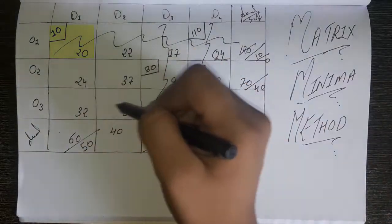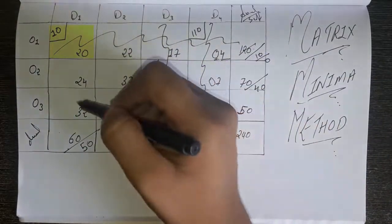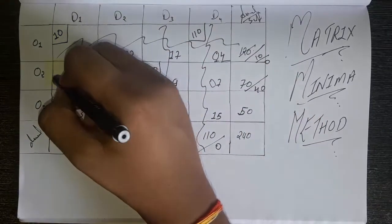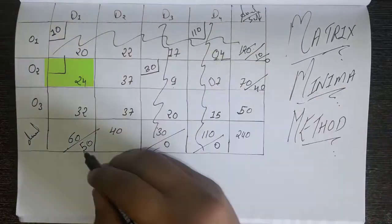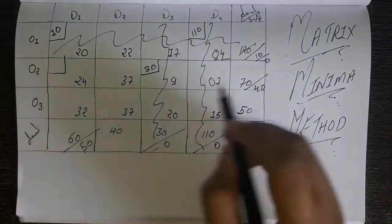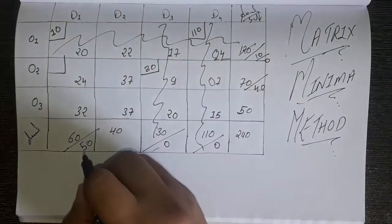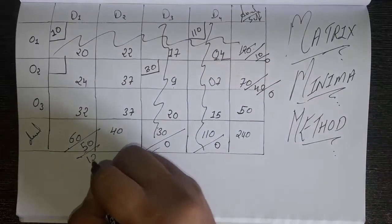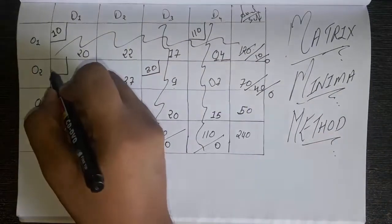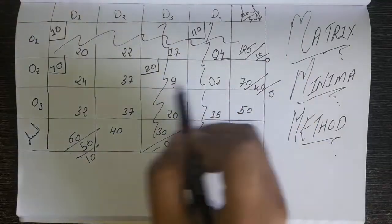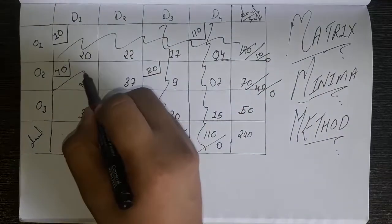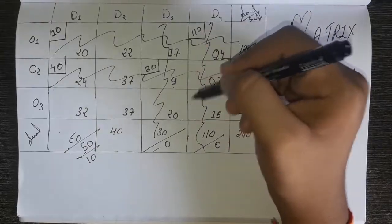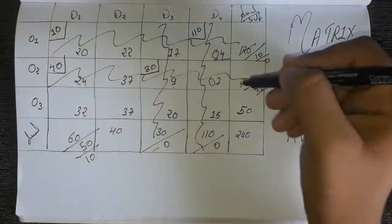Now we have only a 2 by 2 matrix remaining. You can see 24 is the smallest number. Do the same thing — make a box here and look for the supply and availability. The demand is 50 and the supply is 40. So 50 minus 40: the supply becomes 0 and 10 remains here. Write 40 here. Because this became 0, cut out this whole line — but don't cut this other line, as we will need that number.